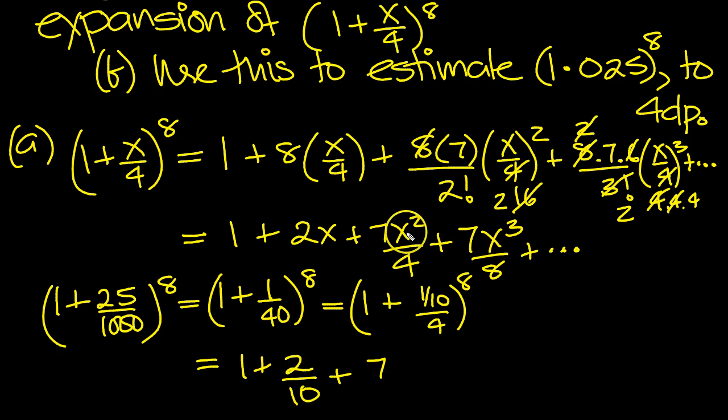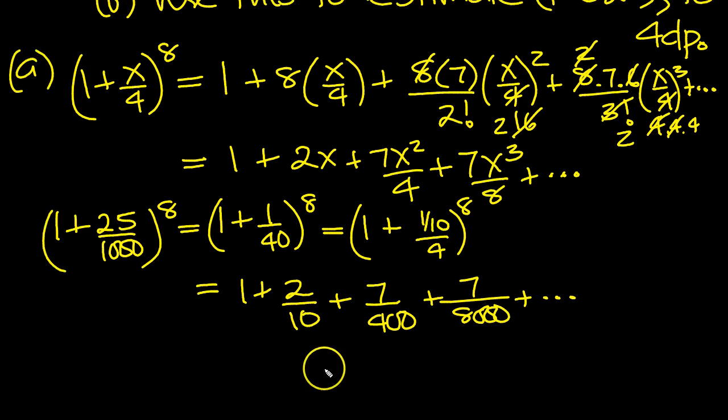Plus 7, 10th squared is 100, so 7 over 400. Plus 7 over, a 10th cubed is 1,000 times 8 is 8,000. So that's equal to then, let's tap this in the calculator.